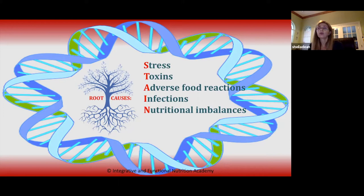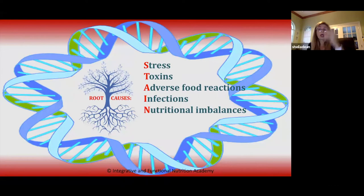T is for toxins — not just obvious toxins like cigarette smoke or lead poisoning, but also biological or endogenous toxins, elemental toxins like mercury, synthetic toxins, pollutants, glyphosate, bisphenol A — the list goes on. A is for adverse food reactions, but not just food: it could be mold, dust, animal products, pollen, or chemicals.